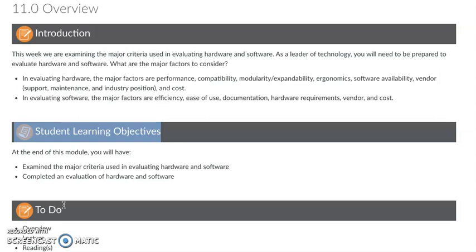This week in module 11, we're going to look at evaluating hardware. Some of the major factors that we may consider are performance, compatibility, modularity, expandability, ergonomics, software availability, vendor support — which is important — and certainly cost, and accessibility. All those things play into the hardware side.